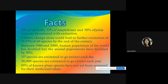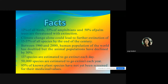An estimated 137 species go extinct each day — 50,000 species per year. Ninety-five percent of known plant species have not yet been screened for their medicinal values. There is a vast diversity of plants with medicinal value that are also declining and need to be conserved.